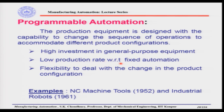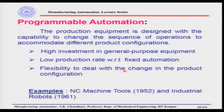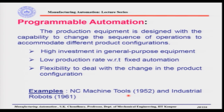The second point for programmable automation is the lower production rate compared to fixed automation. When changing configuration from one batch of products to another, the machine needs changes — for example, in NC machines you need to change the program and change pallet fixtures, which takes time and reduces production rate. The third important characteristic is flexibility to deal with changes in product configuration: in one NC machine you can produce shafts, cut gears, perform drilling, and so on. Examples include NC machine tools developed at MIT around 1952 and industrial robots introduced around 1961.